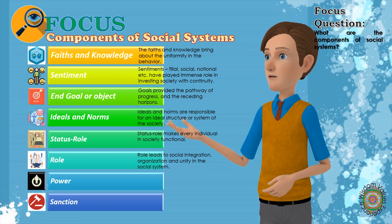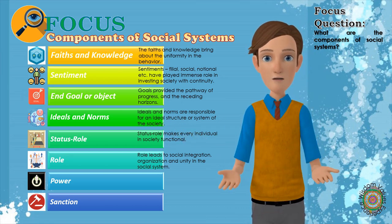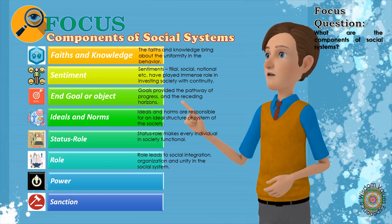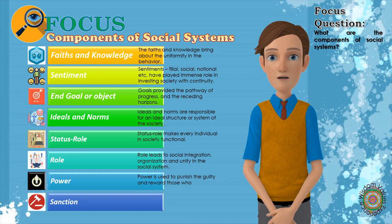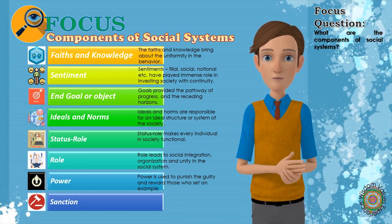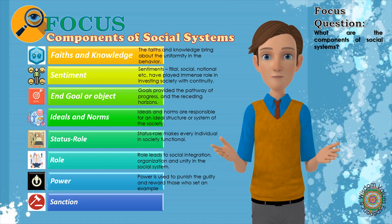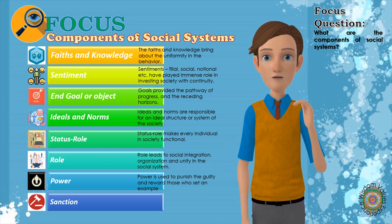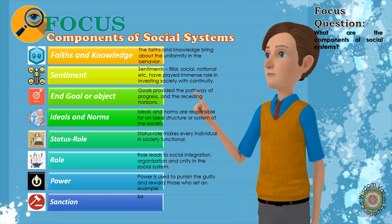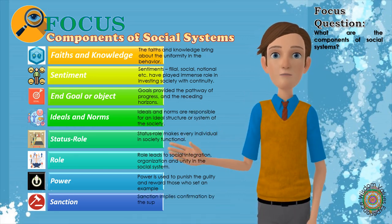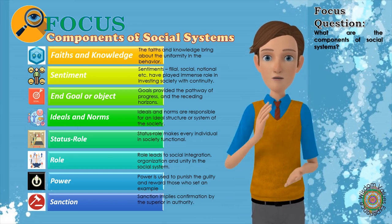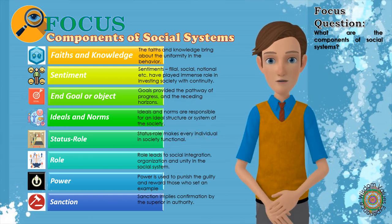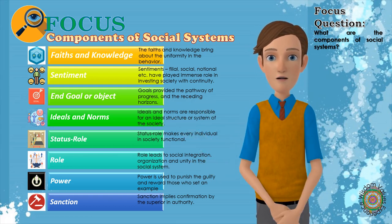7. Power: Conflict is a part of social system, and order is its aim. It is implicit, therefore, that some should be invested with the power to punish the guilty and reward those who set an example. The authority exercising power will differ from group to group — while the authority of a father may be supreme in the family, in the state it is that of the ruler. 8. Sanction: It implies confirmation by the superior in authority of the acts done by the subordinate, or the imposition of penalty for the infringement of the command. The acts done or not done according to norms may bring reward and punishment.